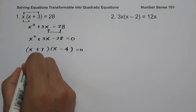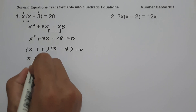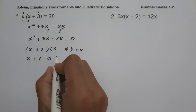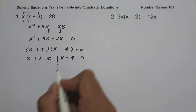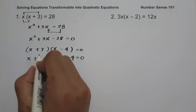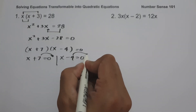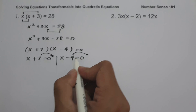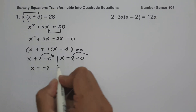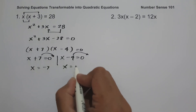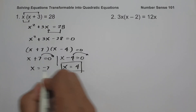Let us equate to zero. This gives us x plus 7 equals 0 and x minus 4 equals 0. Moving the constants to the other side, we get x equals negative 7 and x equals positive 4. This will be our answer.